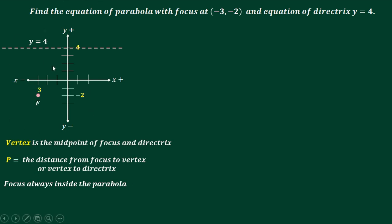Now let's go back to the graph. Since the vertex is the midpoint of the focus and the directrix, we need to compute the distance between focus and directrix using the counting method. Counting from the focus to the directrix gives us 6. Since the vertex is the midpoint, we divide by 2: 6 divided by 2 equals 3.